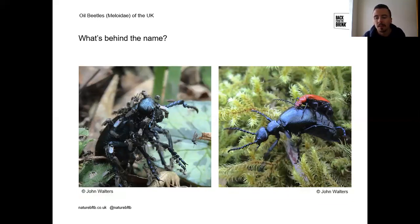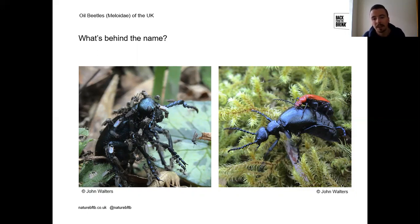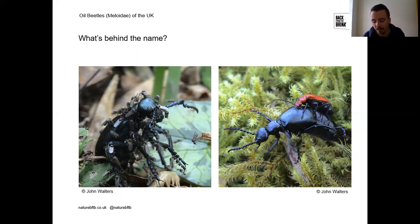This oily substance contains a compound called cantharidin, which is desirable to a number of insect species. In one image, an oil beetle is almost entirely covered in biting midges targeting the joints to access the cantharidin. The midges use it as chemical defence against predators such as birds or bats. A cardinal beetle is also shown biting an oil beetle for the same purpose — to take up that cantharidin compound and use it as chemical defence.